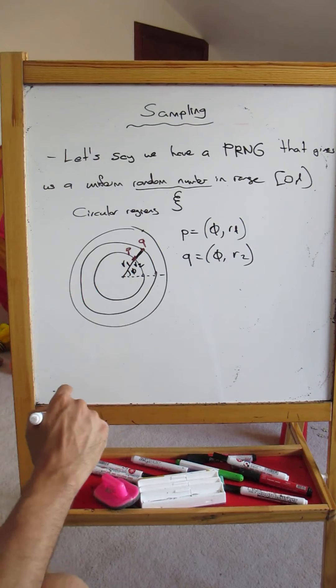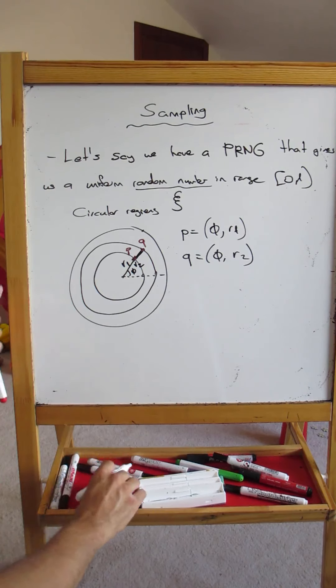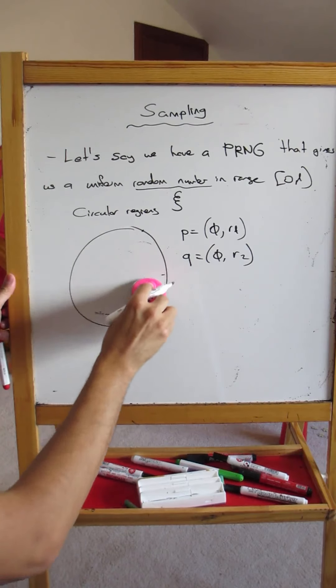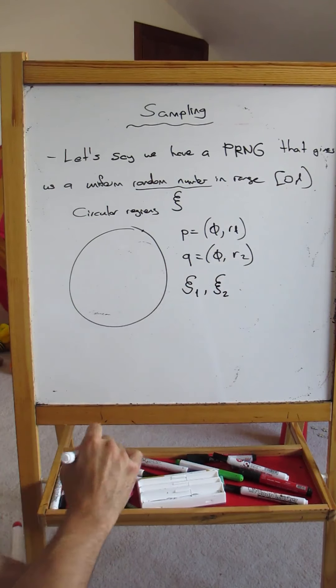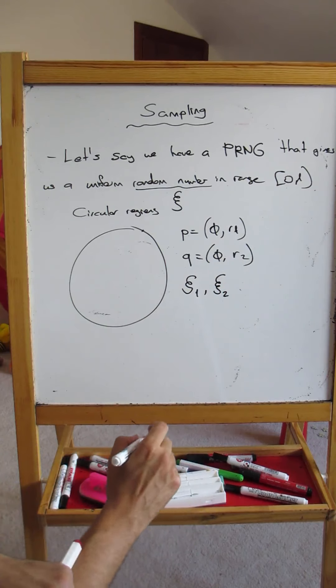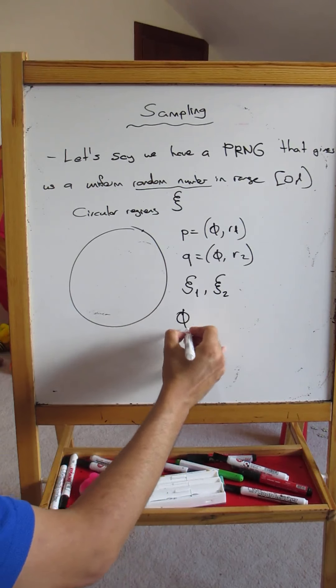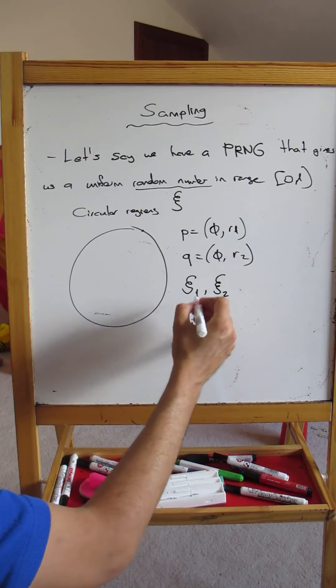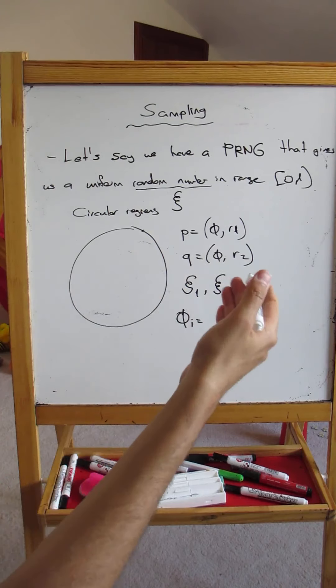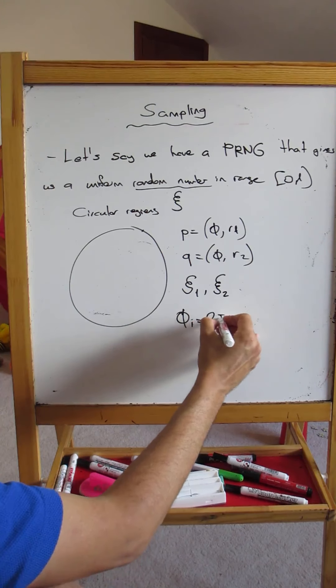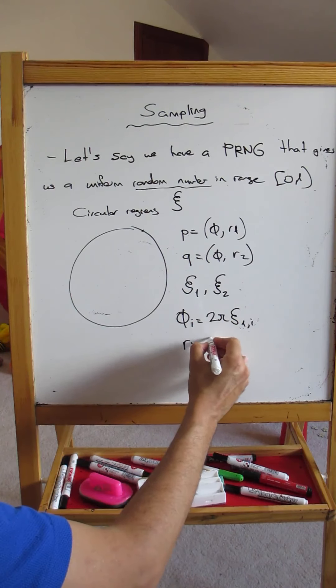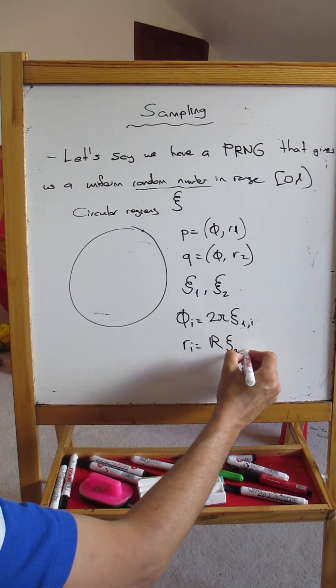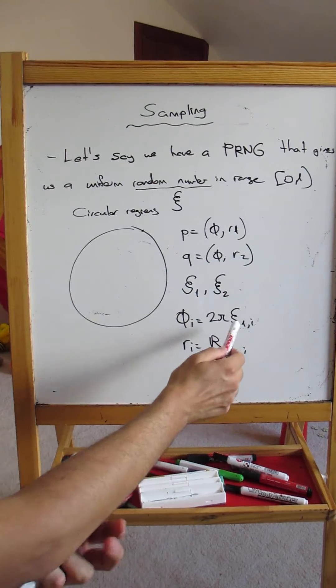Now imagine that you want to sample uniformly on this disk. One approach could be: generate two random numbers psi 1 and psi 2, and let's say I will choose my phi using phi_i equals - the domain of phi is 2π, right? So phi_i = 2π * chi_1i, and r_i equals r times chi_2i.